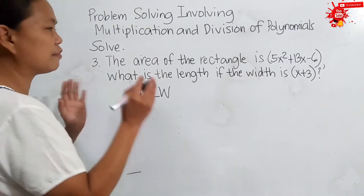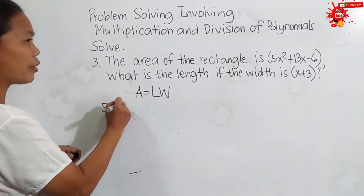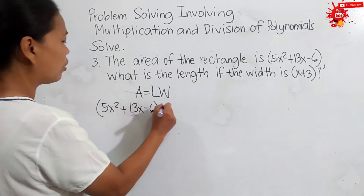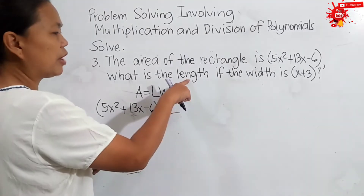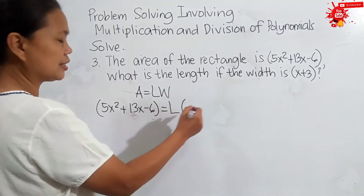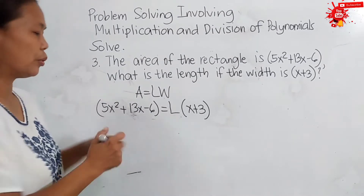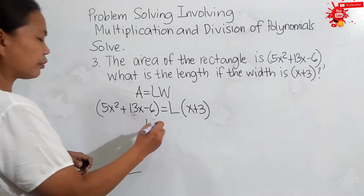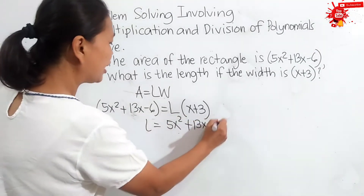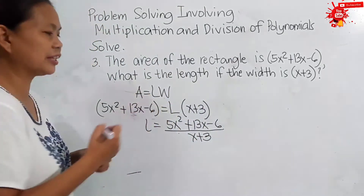We substitute the given values. The area is 5x squared plus 13x minus 6, which equals L times the width, which is x plus 3. We don't have the value for L because we are looking for the length. So, L is equal to 5x squared plus 13x minus 6 all over x plus 3. So, the operation is division.